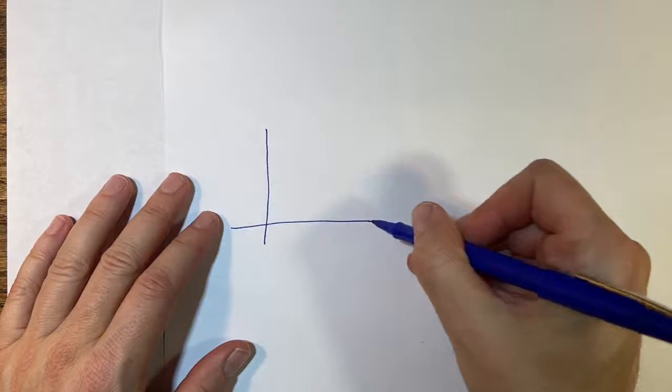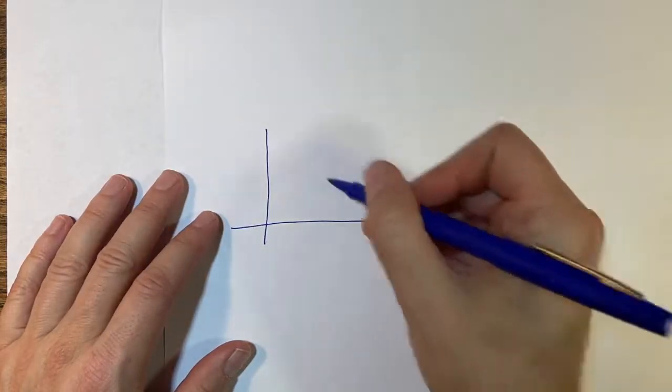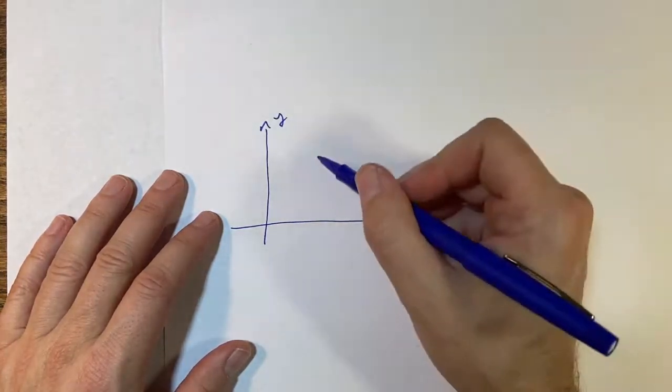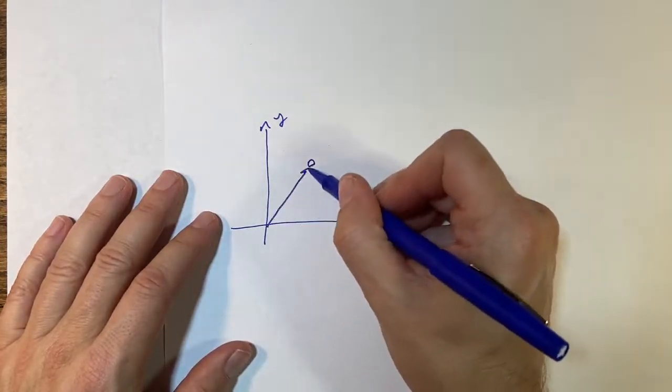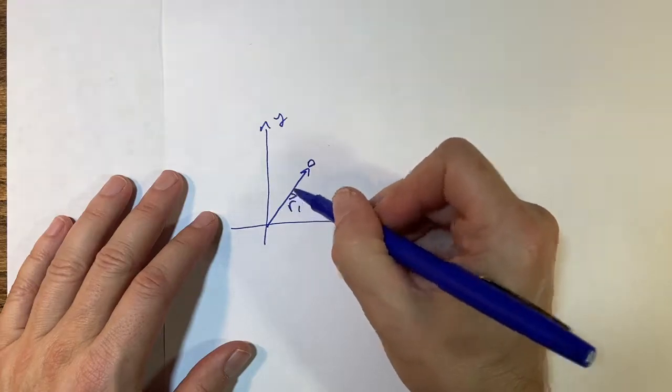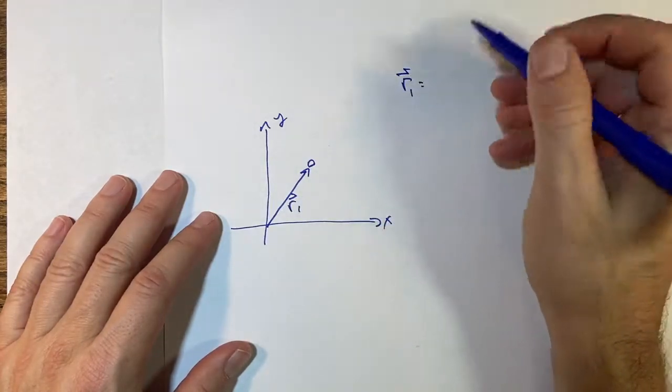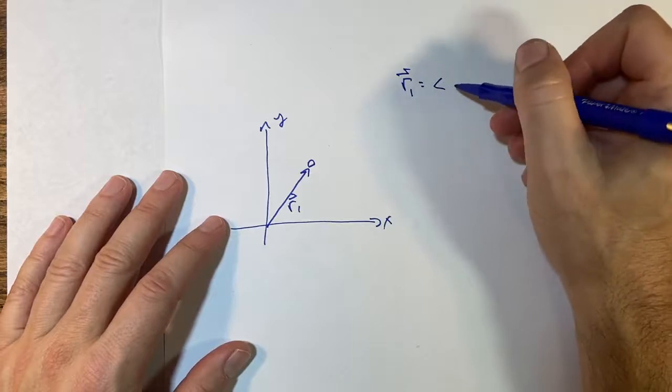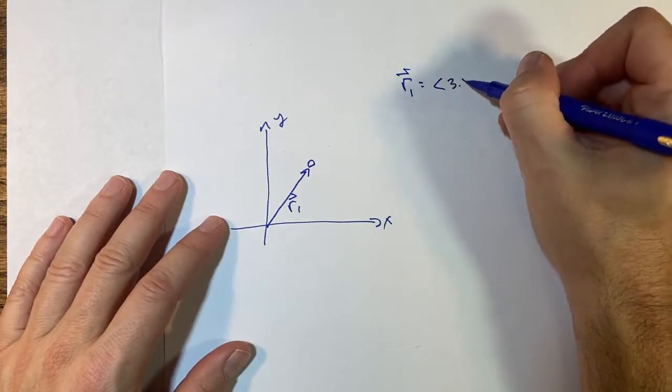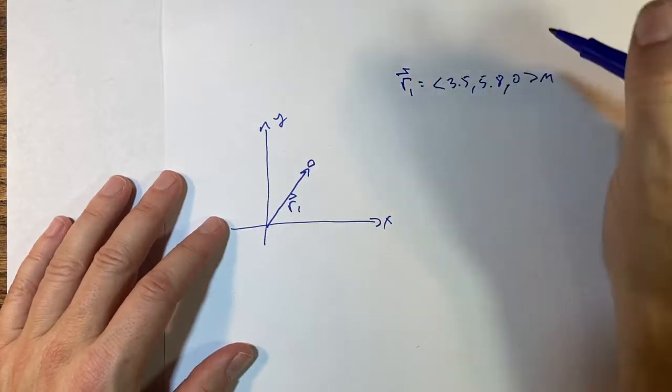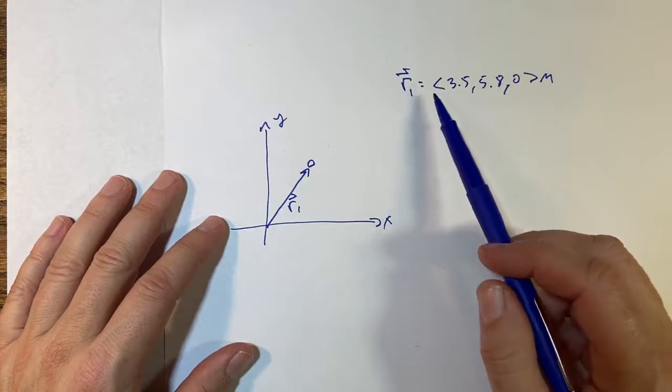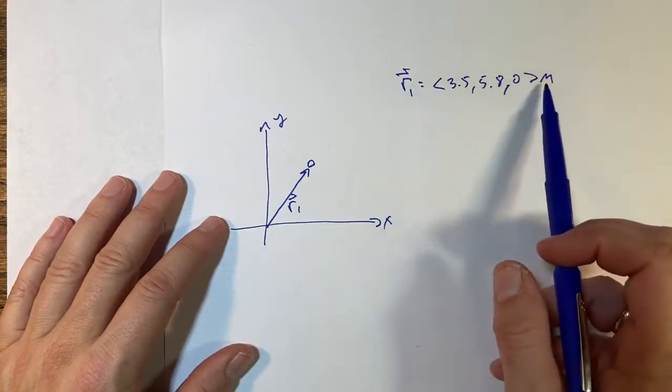Kind of like the same problem - I'm going to get some numbers here. Suppose I have, let's say this is x and y, and I have a bird right here at a position r1 where r1 equals, I'm making this up here, let's say 4.3, 5.8, 0 meters.